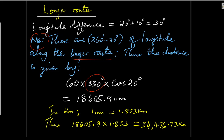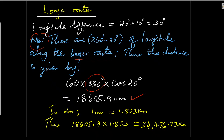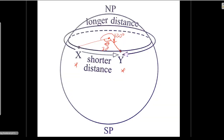The formula remains the same: 60 × θ × cos(α). So 60 × 330 × cos(20°) gives 18,605.9 nautical miles. You can see this one is longer — comparing it with the shorter route which was 1691.4, this one gives 18,605. Again, if you want to convert to kilometers, one nautical mile equals 1.853 kilometers, so you multiply 18,605 and get the answer in kilometers. That is basically how you calculate the longer and shorter distances along the parallel of latitude.